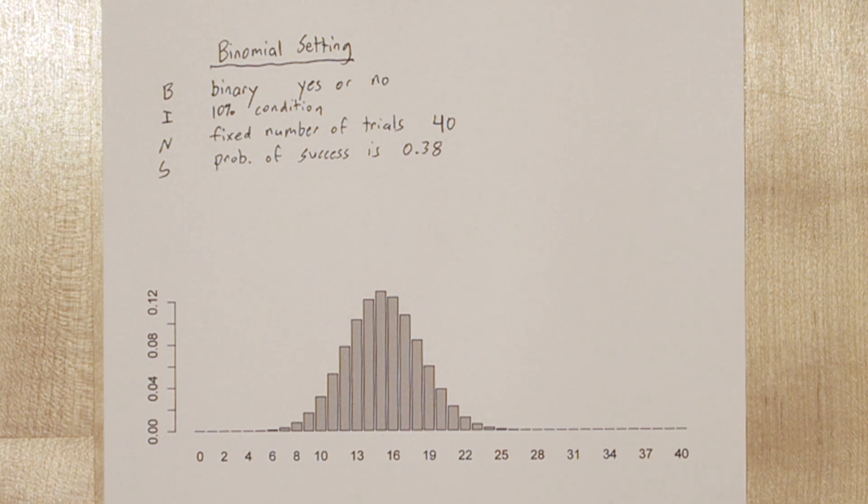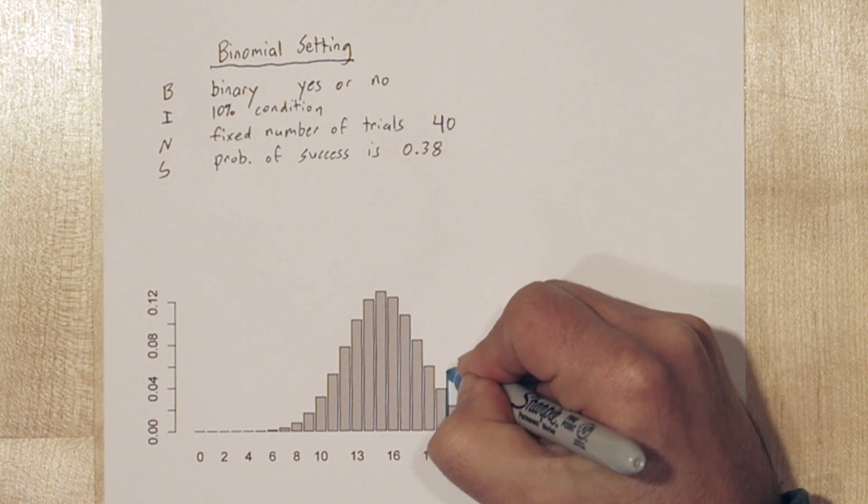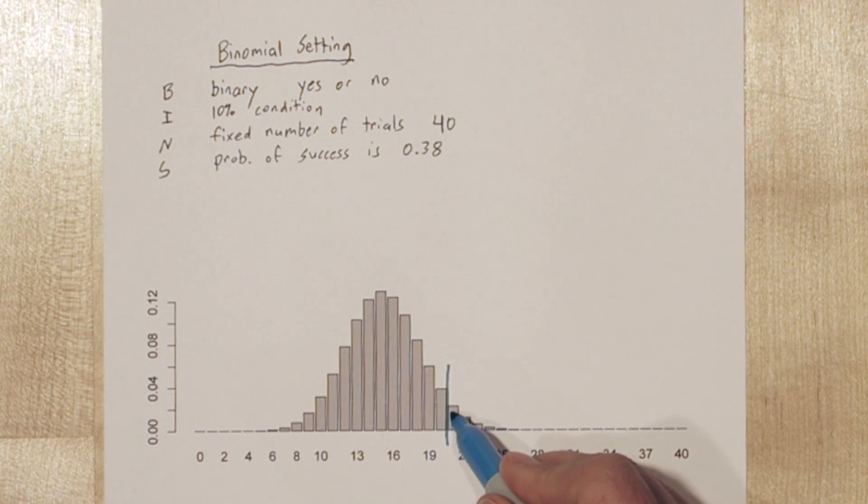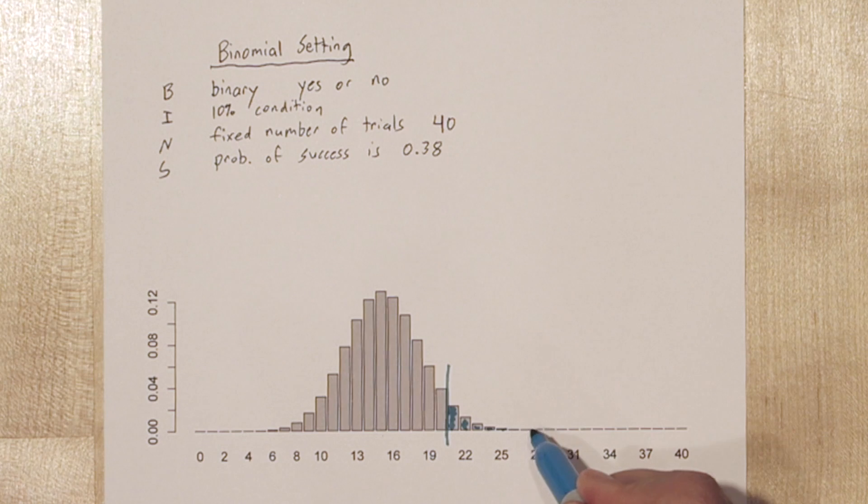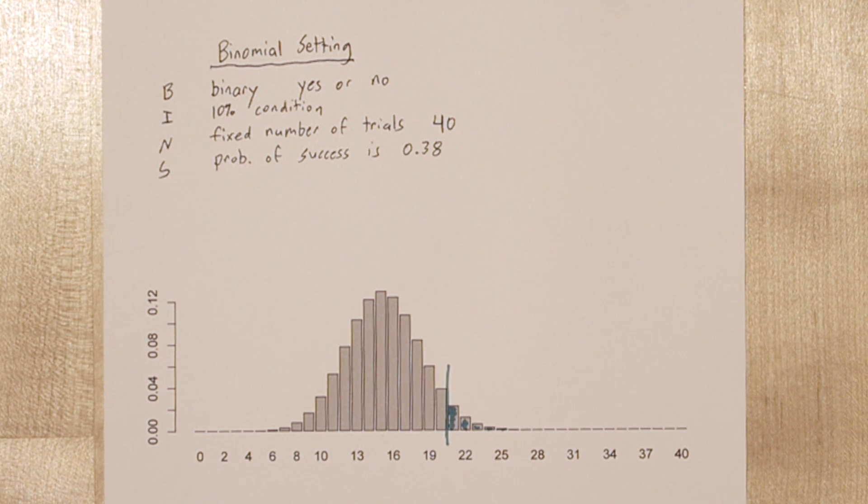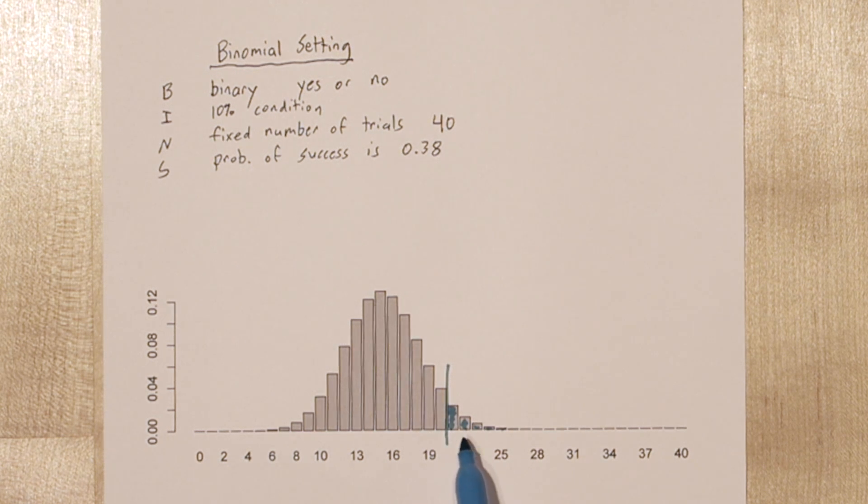We need 21, 22, 23, 24, really anything 21 or higher. So that's all these probabilities right here. So the actual probability that the majority of the sample wants a new mascot is the sum of these areas right here.